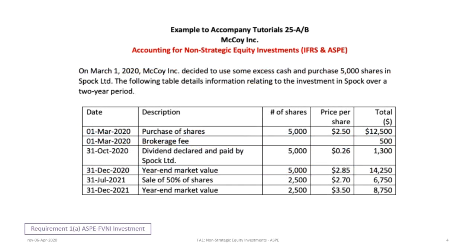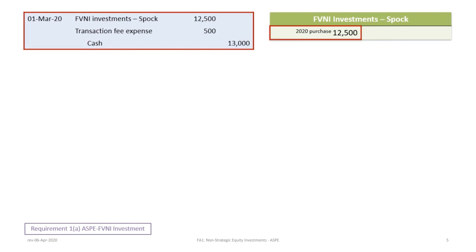This is a snapshot of the information. On March 1, 2020, McCoy decides to purchase 5,000 shares in Spock Limited. We're going to set up a T-account as we did with the previous tutorial. On March 1, 2020, McCoy makes the investment, so we debit FVNI Investments — Spock for $12,500, which is 5,000 shares at $2.50.